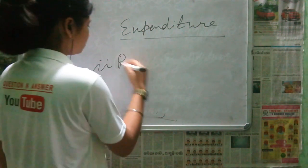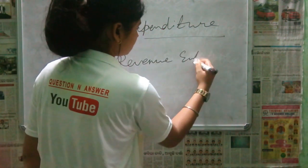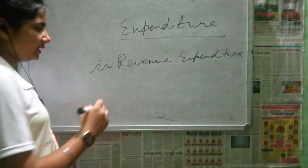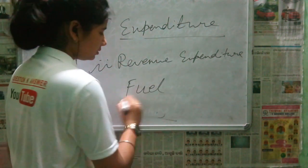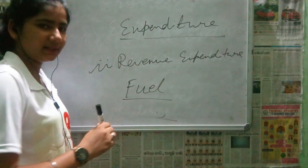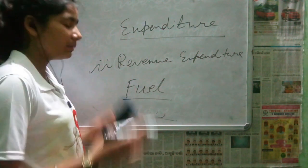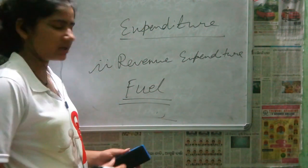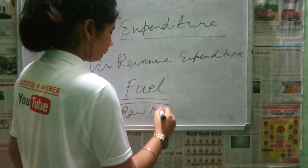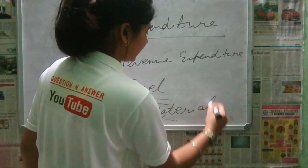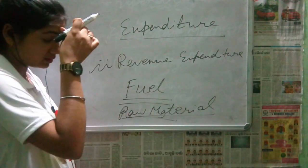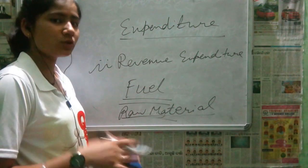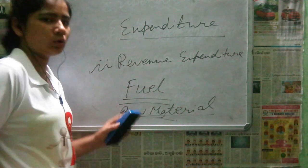The second type is revenue expenditure. Revenue expenditure includes things like fuel, which helps increase our profit, and raw materials, which help us make the final product. These give us daily profit and are expenses we maintain regularly.